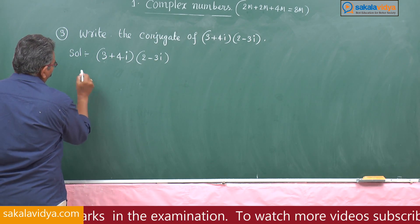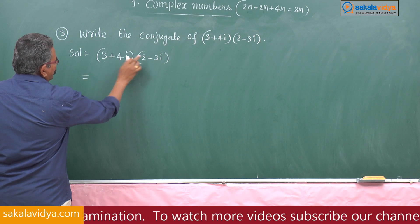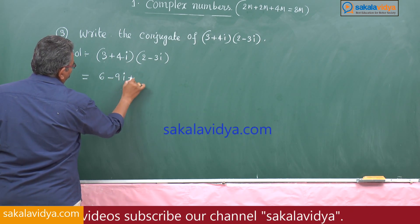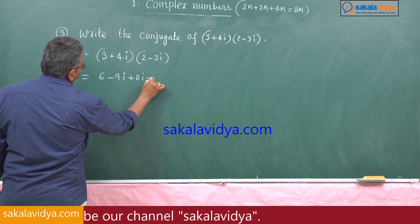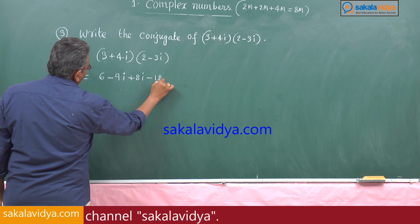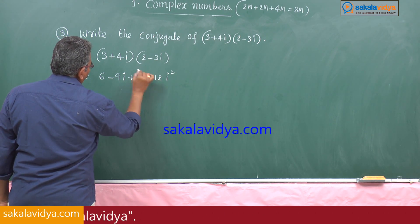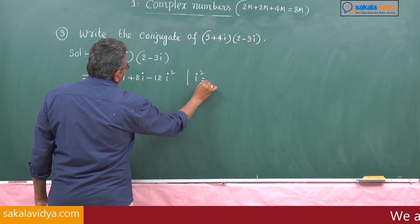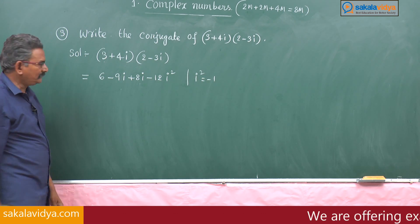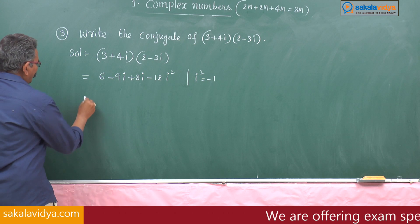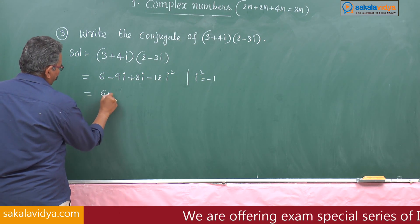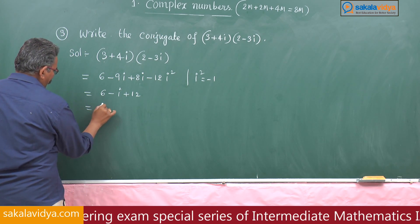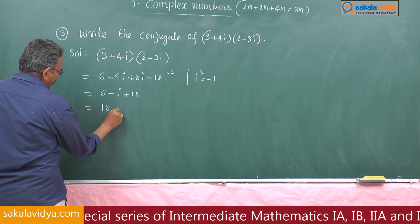This equals 6 - 9i + 8i - 12i². We know i² = -1, so this becomes 6 - i + 12, which is 18 - i.